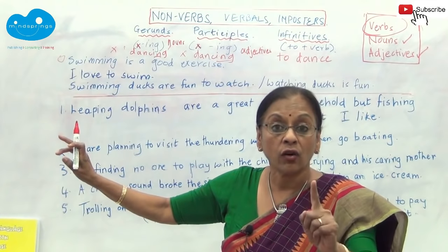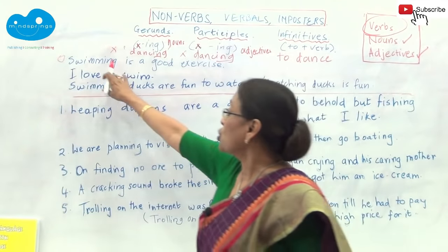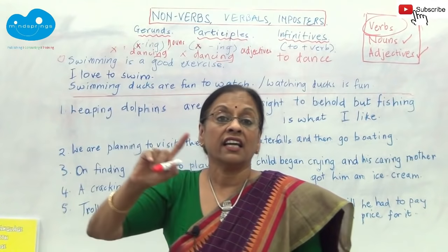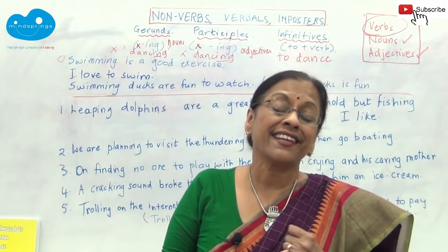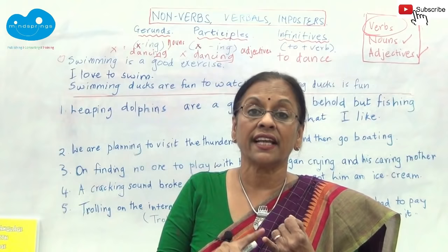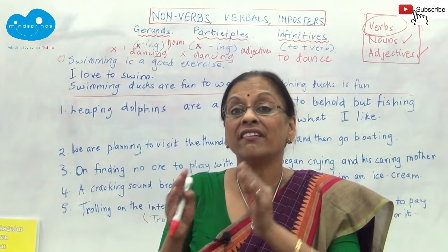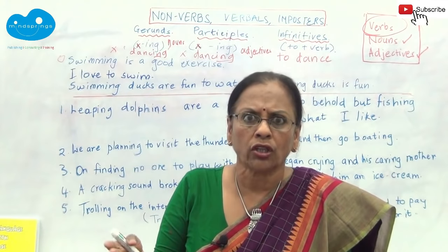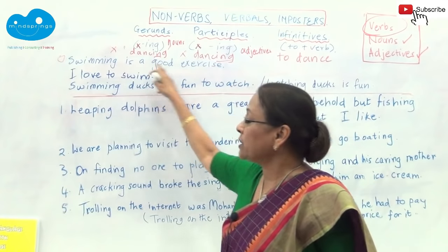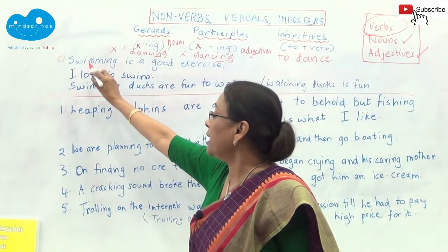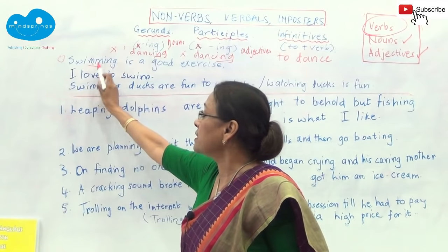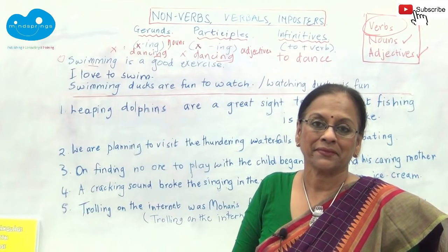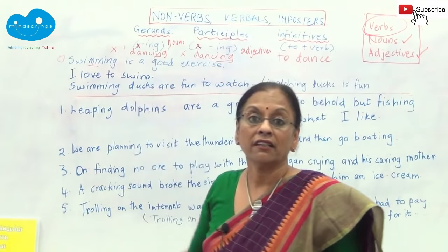I automatically know this is either a gerund or a participle. Now I have to find out whether it's a noun or an adjective. 'Swimming is a good exercise' — if it is an adjective, it must have a noun after it. We've always said you can't just say 'pretty' or 'cute' without a noun — cute what? So here, 'swimming' cannot be an adjective because it doesn't have a noun after it. Therefore it must be a noun.